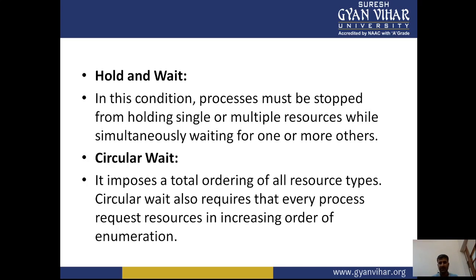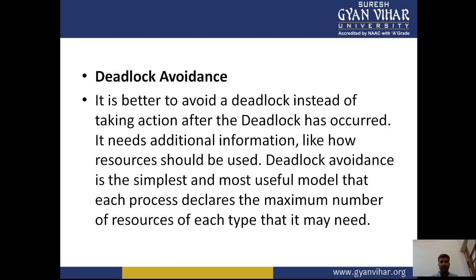Hold and wait: a process must be stopped from holding single or multiple resources while simultaneously waiting for one or more others. Circular wait imposes a total ordering of all resource types and requires that every process requests resources in an increasing order of enumeration.